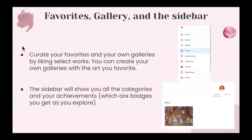There's also the option to go to the Favorites gallery and the sidebar on the website. You can get all of your favorite works into your own gallery by liking selected works — you do this by clicking on the heart button located beside an artwork, collection, or gallery. Then you can go to the sidebar, which shows you all the categories and your achievements. As you explore, you get badges, so it's kind of like a little prize for going on the site and learning more about the art.